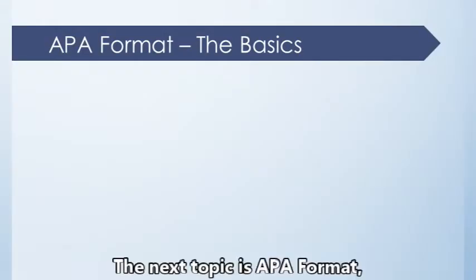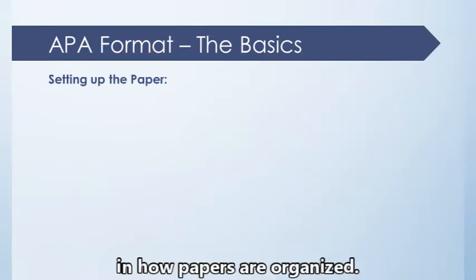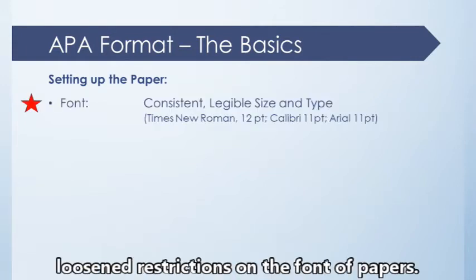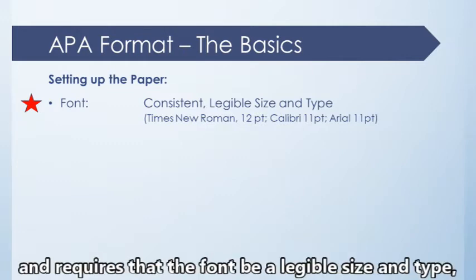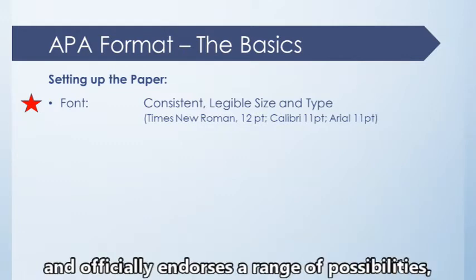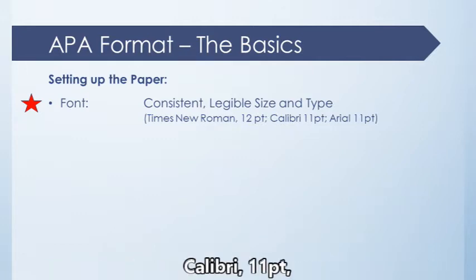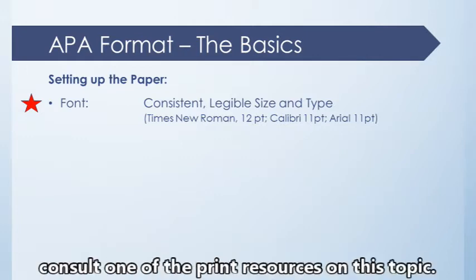The next topic is APA format, and there are several important changes in how papers are organized. First, note that the APA has loosened restrictions on the font of papers. The 7th edition prioritizes consistency, and requires that the font be a legible size and type, officially endorsing a range of possibilities including Times New Roman 12 point, Calibri 11 point, and Arial 11 point. For a longer list of possibilities, consult one of the print resources on this topic.